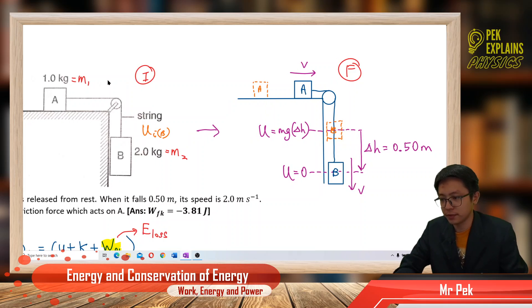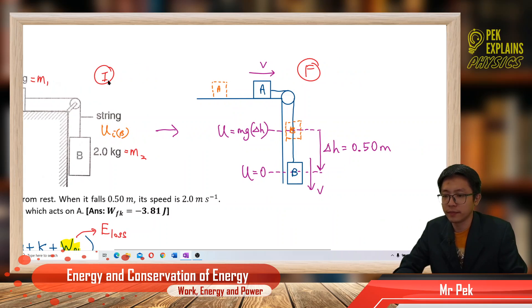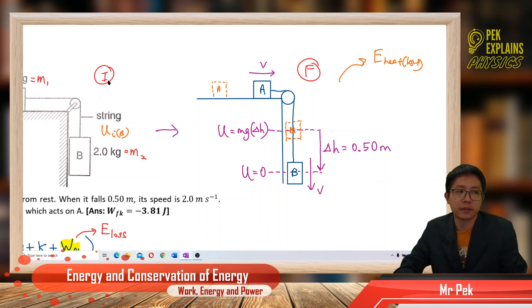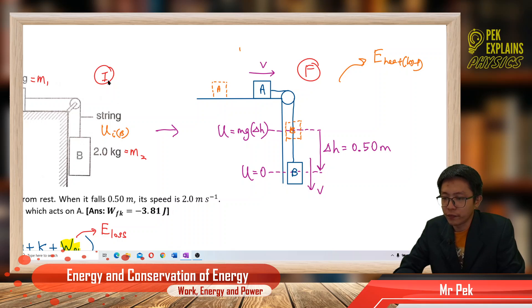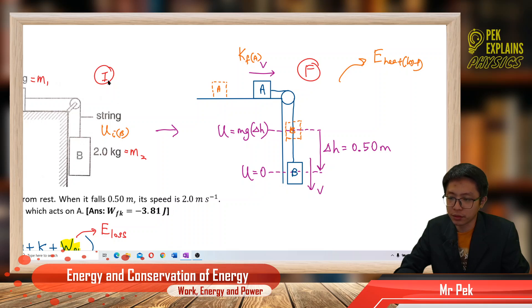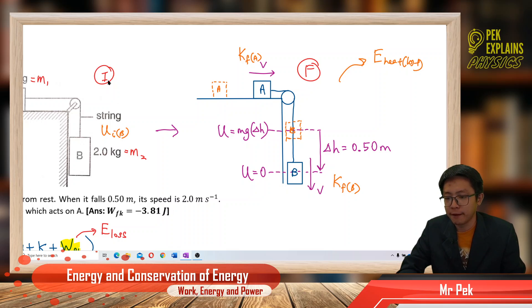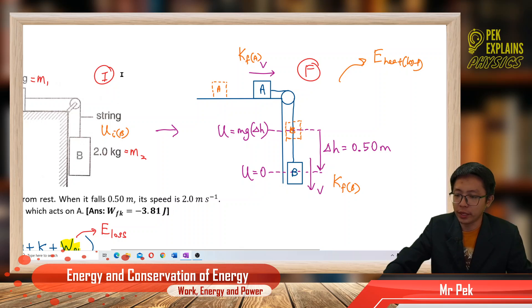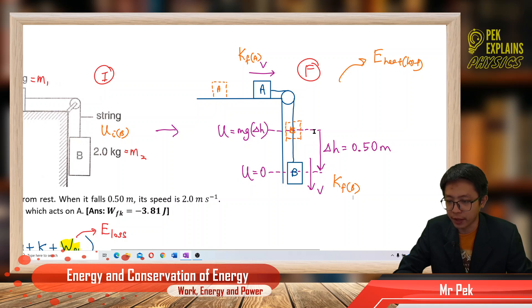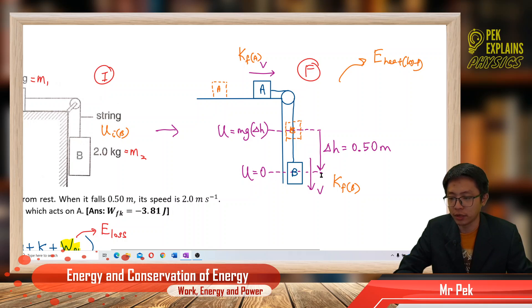After block B falls, some of the energy is lost as heat. Block A has gained some kinetic energy, and block B also gains some kinetic energy — that is the final kinetic energy for block B. We assume that at the final level, after 0.5 meter, it has zero gravitational potential energy.